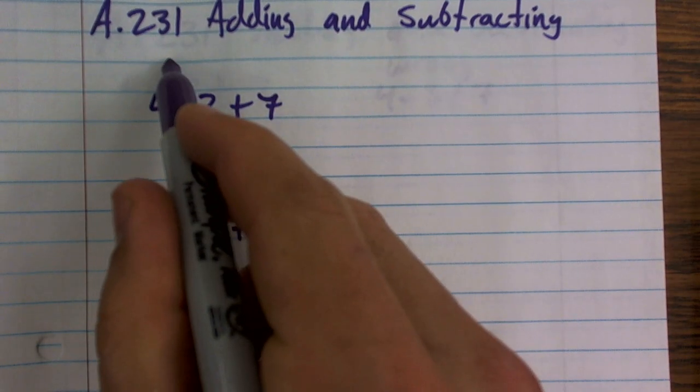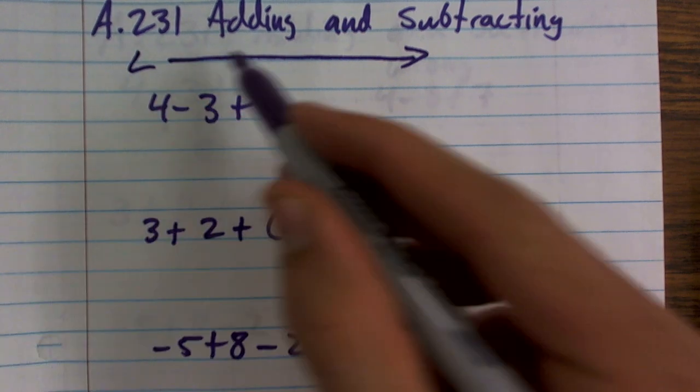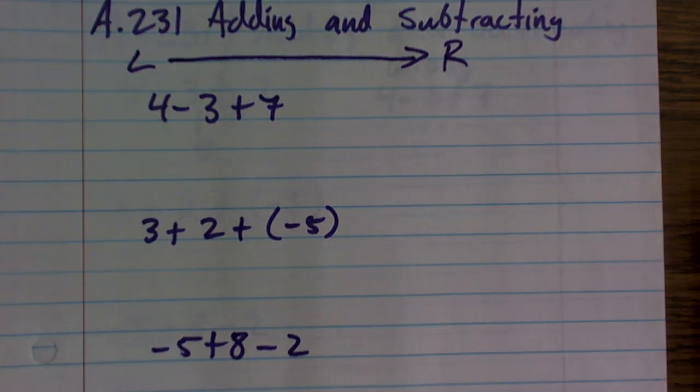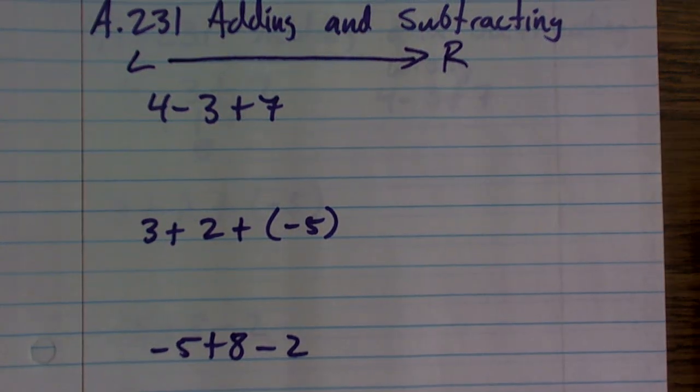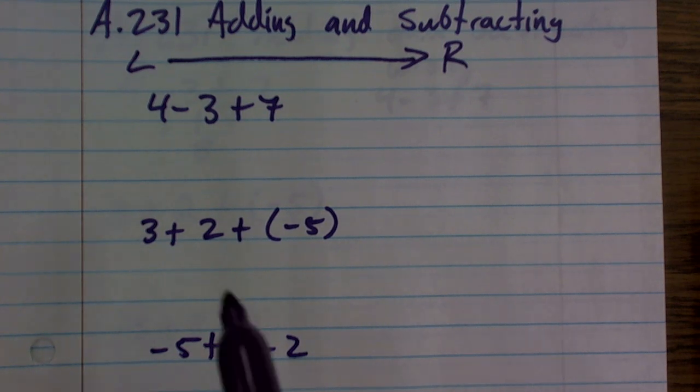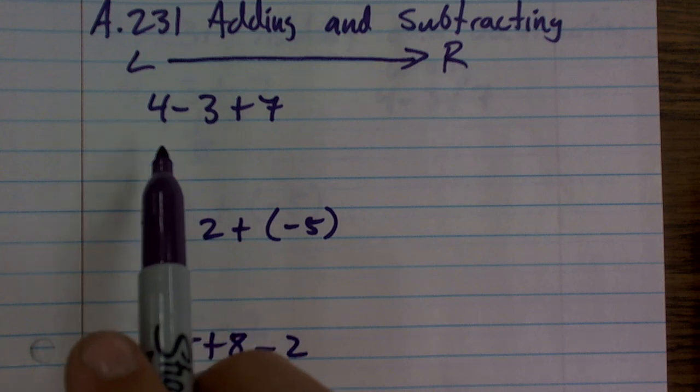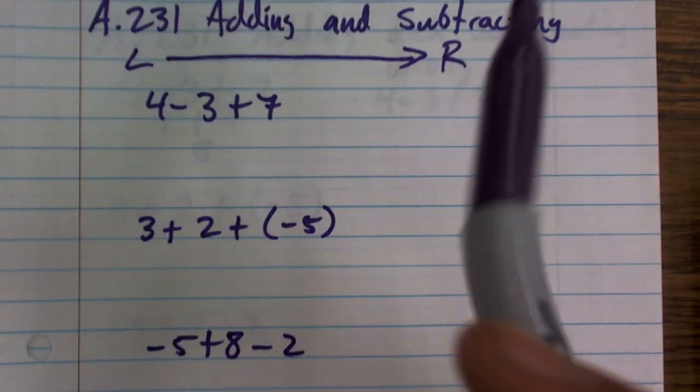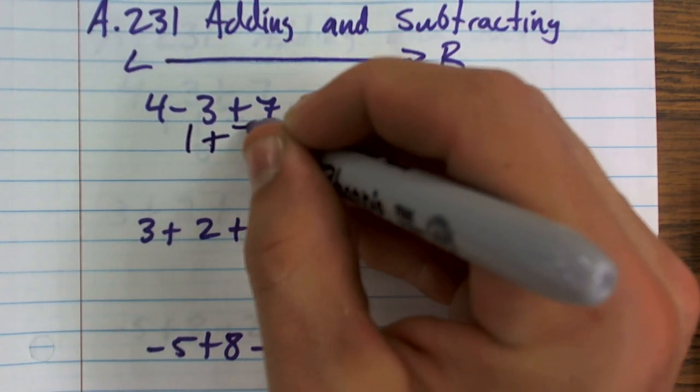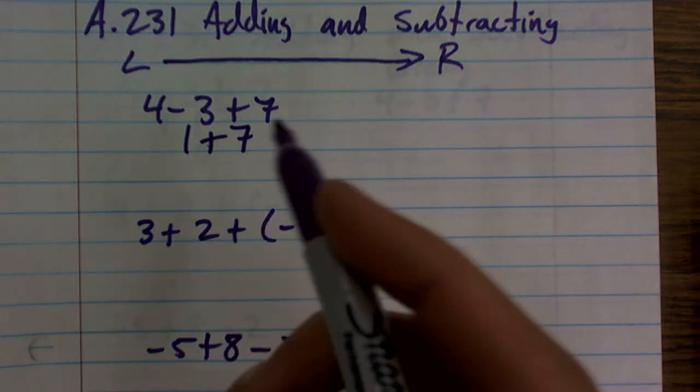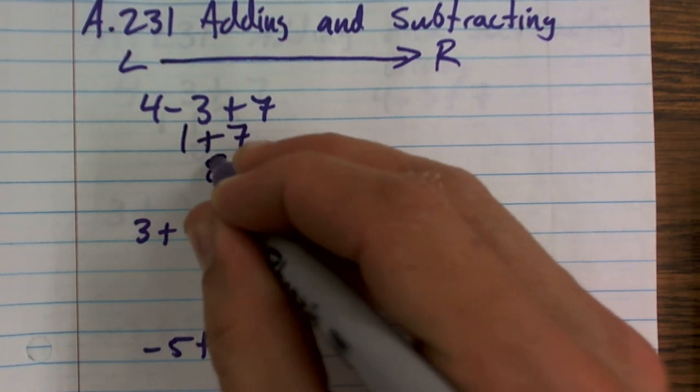When adding and subtracting, you always want to go from left to right. You don't want to do addition first and then subtraction. Work from left to right just like you read a sentence. So, 4 minus 3 is going to be 1 plus 7. Now I can add 1 plus 7, which gives me 8.